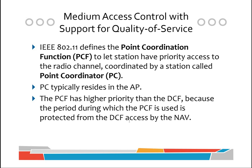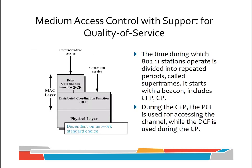The PCF has higher priority than DCF because the period during which PCF is used is protected from DCF access by the NAV or Network Allocation Vector. The NAV is used for virtual sensing — whenever it is turned on, no other stations can access the network even if the network is not busy. As PCF turns on the NAV when it starts communicating, all other stations following DCF cannot access the medium at the same time.